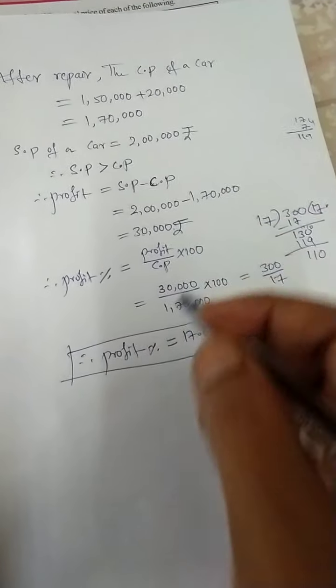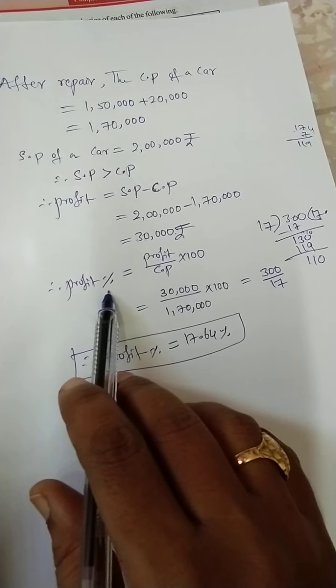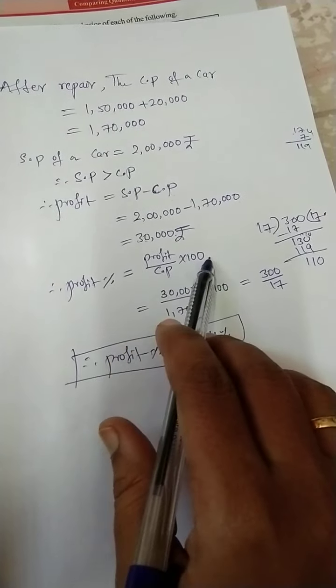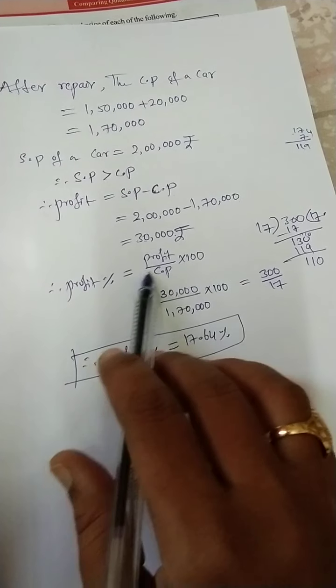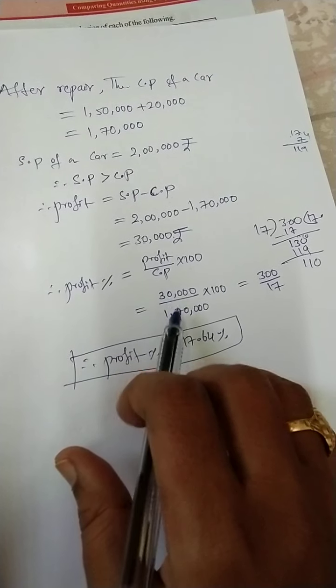And the profit percent: profit by cost price into 100. This is the formula you need to remember. Now profit is 30,000 rupees divided by cost price 1 lakh 70,000 into 100.